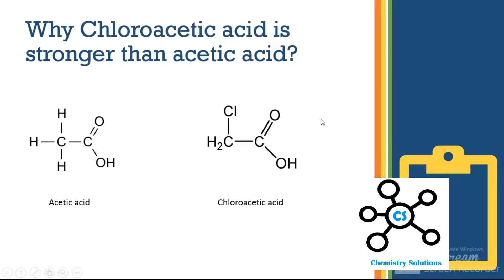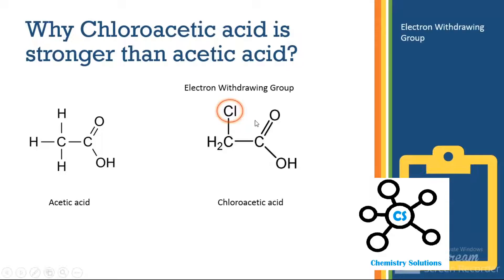Moving towards the answer: why is chloroacetic acid stronger than acetic acid? In the formula, you can see that in chloroacetic acid the chloro group is attached. What this chloro group does is act as an electron withdrawing group — it attracts all of the electron density towards itself. As a result, the oxygen atom attached to the carbon gets devoid of, or lacks, negative charge on it.